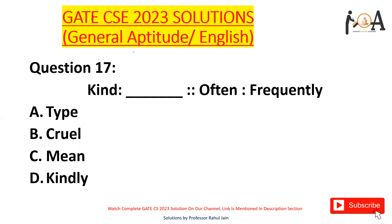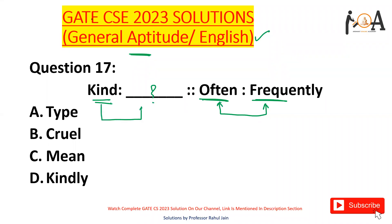Here we are having one question from general aptitude, and the question was very easy from the English section. The question is: what matches to 'kind' if 'often' matches with 'frequently'? So in the same fashion, how 'often' relates its meaning to 'frequently', we can relate 'kind' from the given four options on the same parameter.